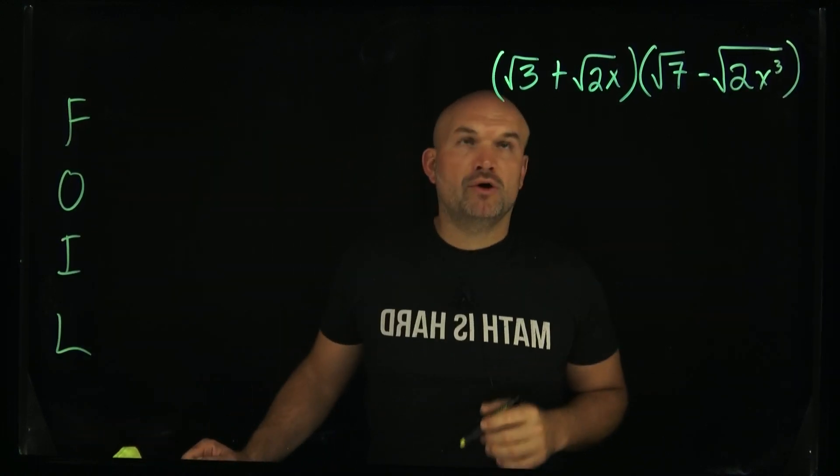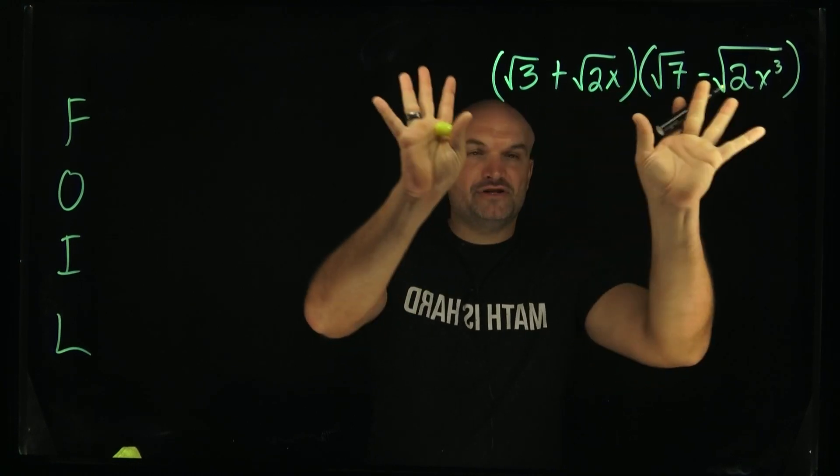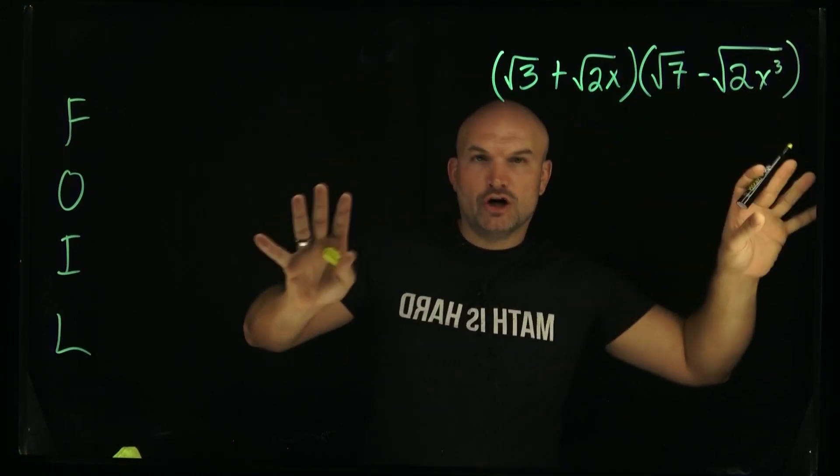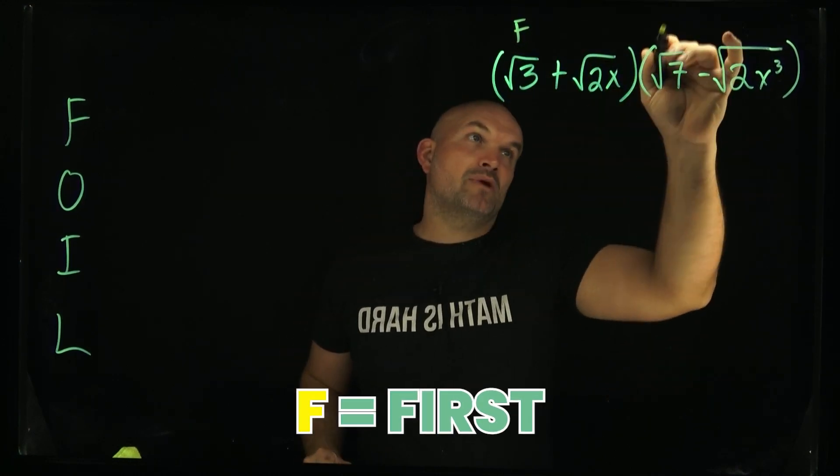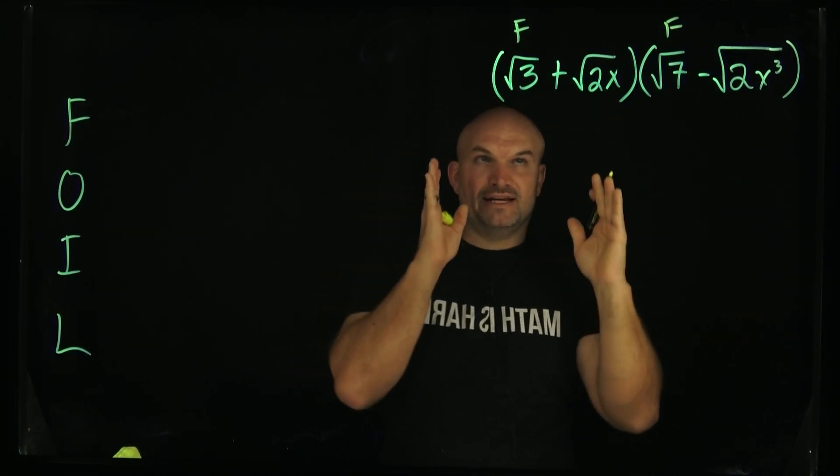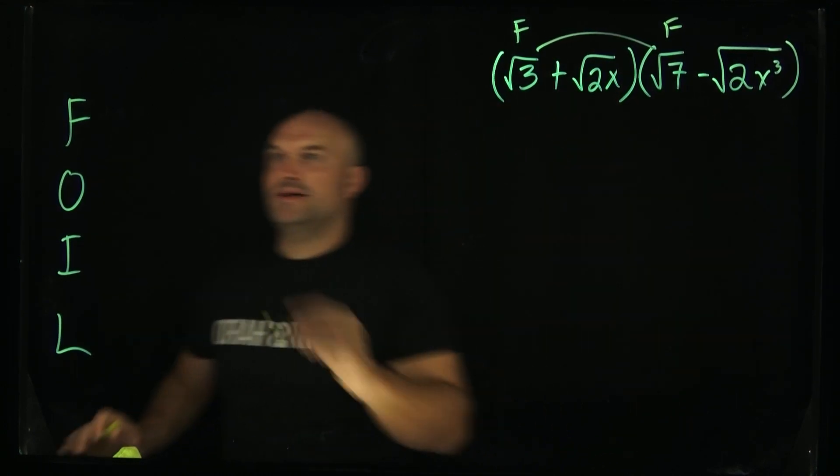When we're talking about FOIL, you can categorize the terms based on where they are inside of the problem. The first one is F, which represents our first. So you're going to take the first two terms of each of these binomials, and we're going to multiply them.